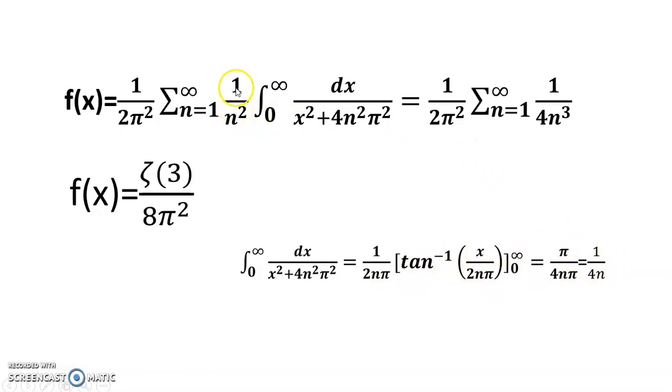So 1/(4n) into 1/n² if I multiply, then I get 1/(4n³), and summation 1/n³ equals ζ(3), and 4 times 2 equals 8. So I get the answer, ζ(3)/(8π²), so this is my answer. Thanks for watching.